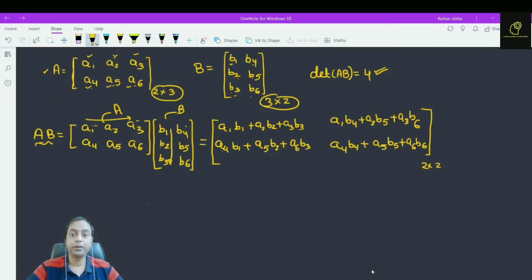Similarly, this is first row and second column: A1 B4, A2 B5, A3 B6, A4 B4, A5 B5, A6 B6.